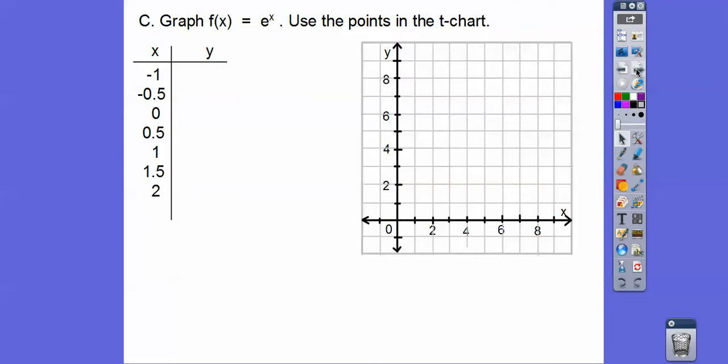So let's graph this function right here. Graph f(x) equals e to the x. And we're going to use these points in this t-chart right here. So let's plug in negative 1. So e to the negative 1. Well, that's 1 over e to the positive 1. But if you used your exponent feature, e to the negative 1 would give us 0.367. So when x equals negative 1, it's about 0.367. Let's try x equals negative 0.5. So put in negative 0.5. Make sure you can get those decimals. So you get about 0.61 or something.